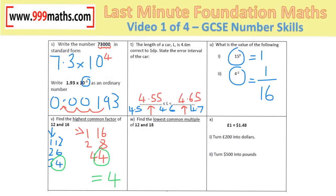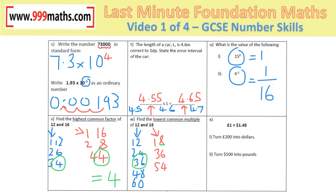The lowest common multiple can also be found by listing. The multiples of 12 are 12, 24, 36, 48, 60 and so on. The multiples of 18 are 18, 36, 54. No need to continue because 36 already appears in both lists — it's the lowest common multiple.